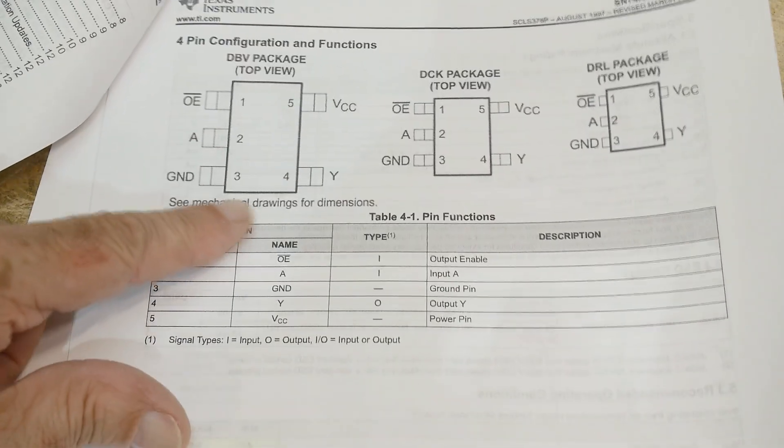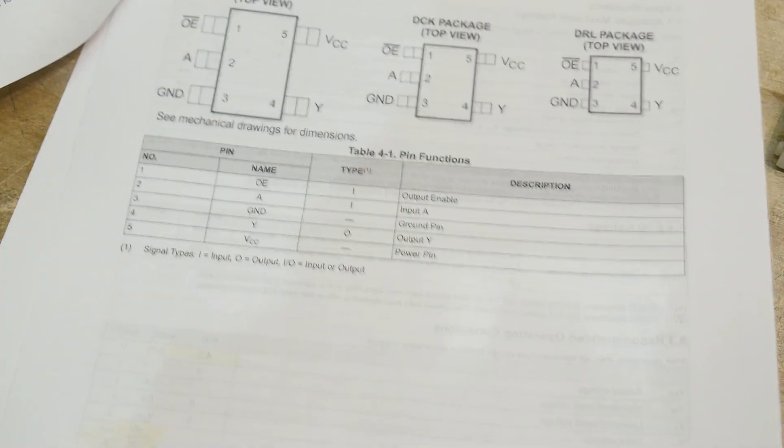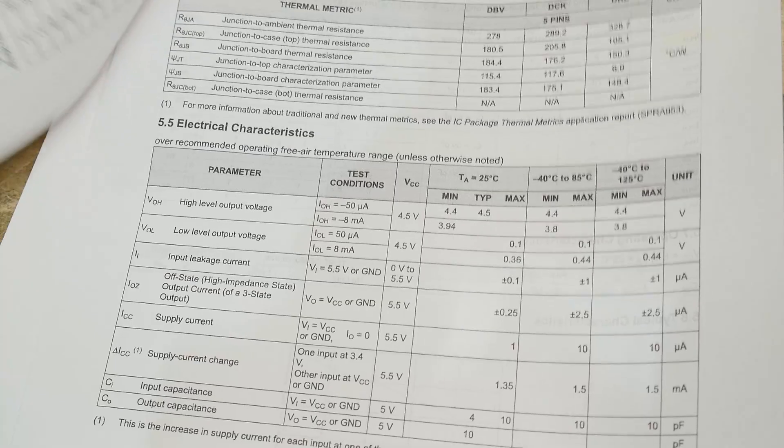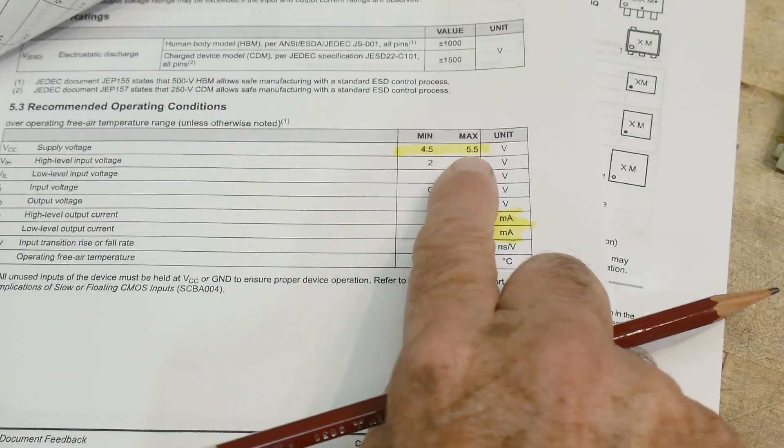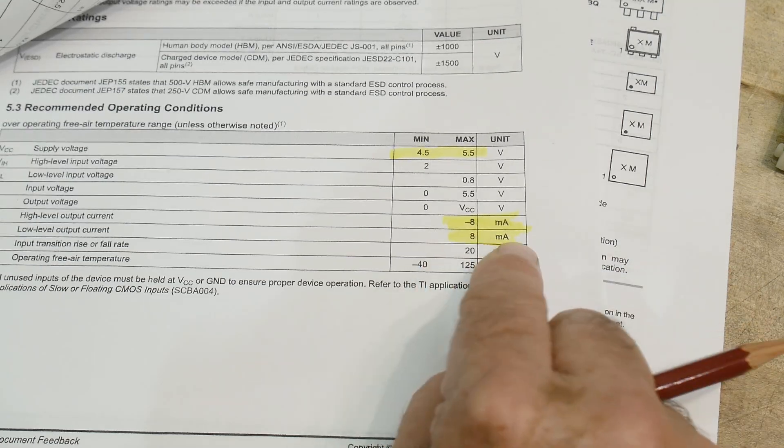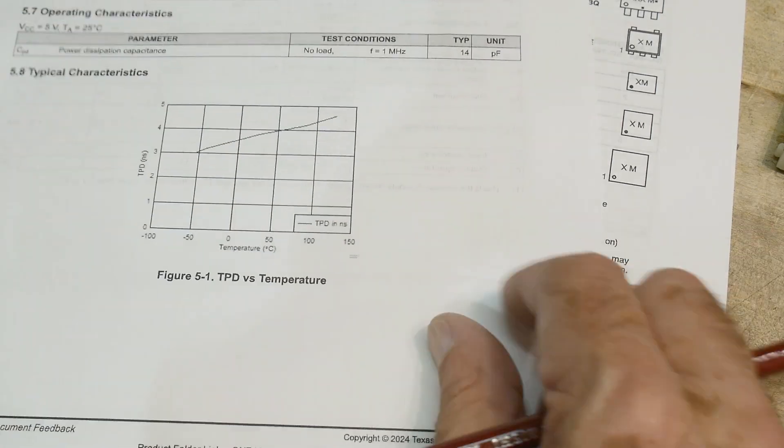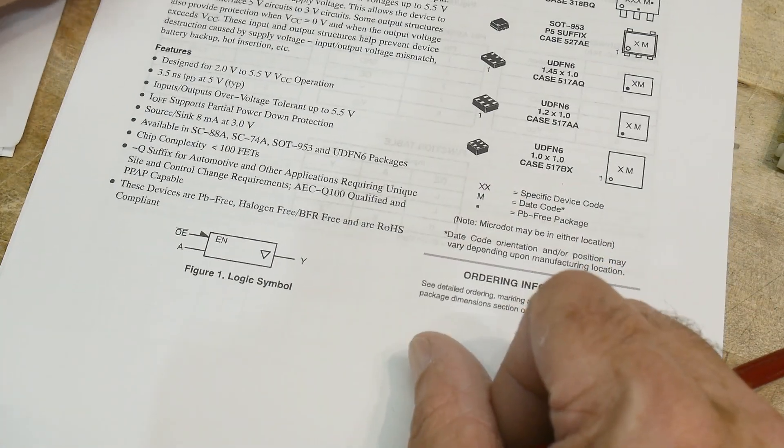There are these funny little packages. This one is supply voltage four and a half to five and a half, plus or minus eight milliamps. That's pretty good.